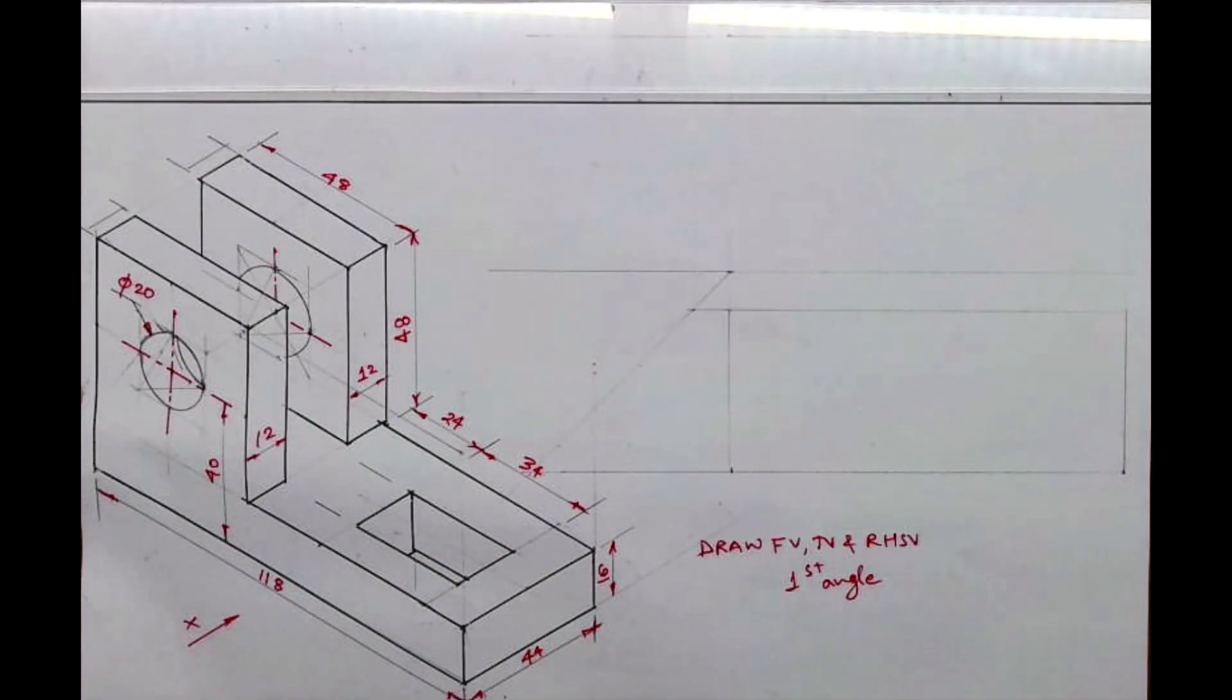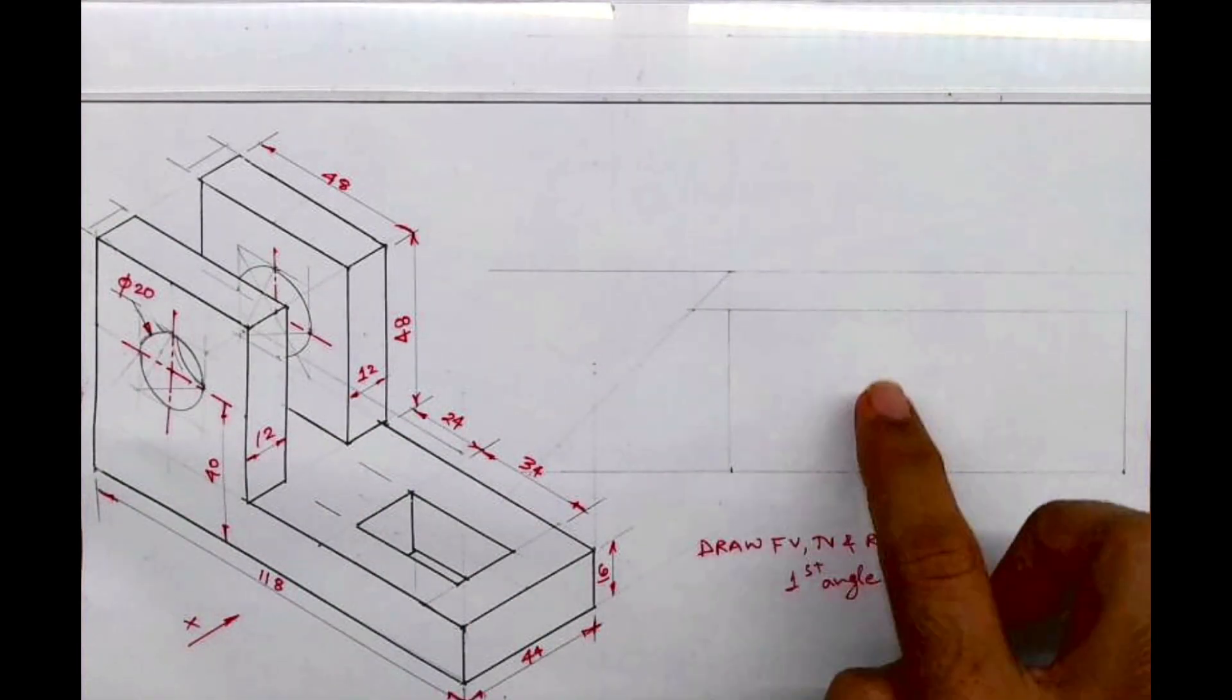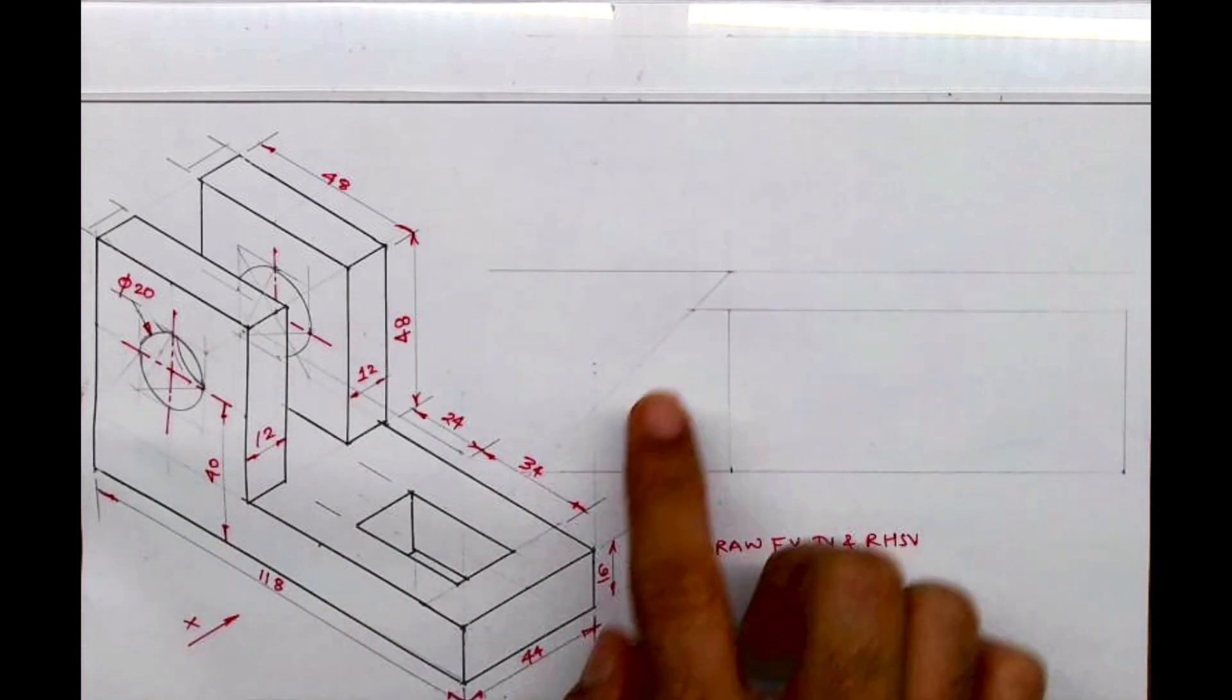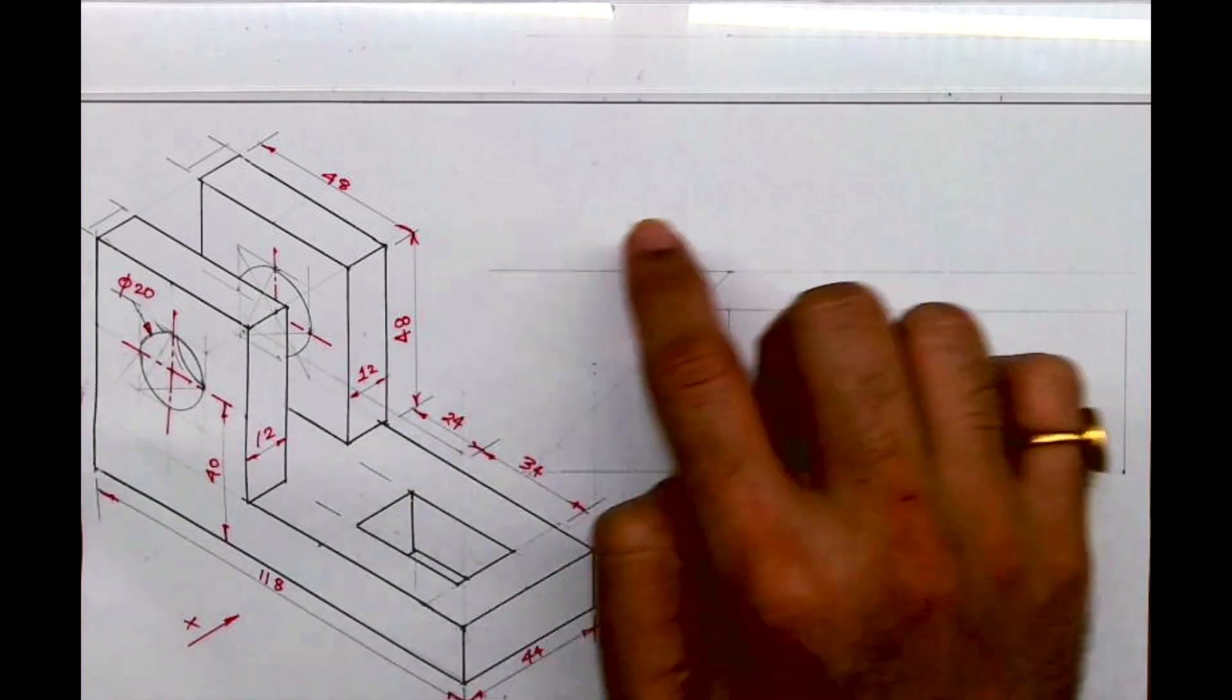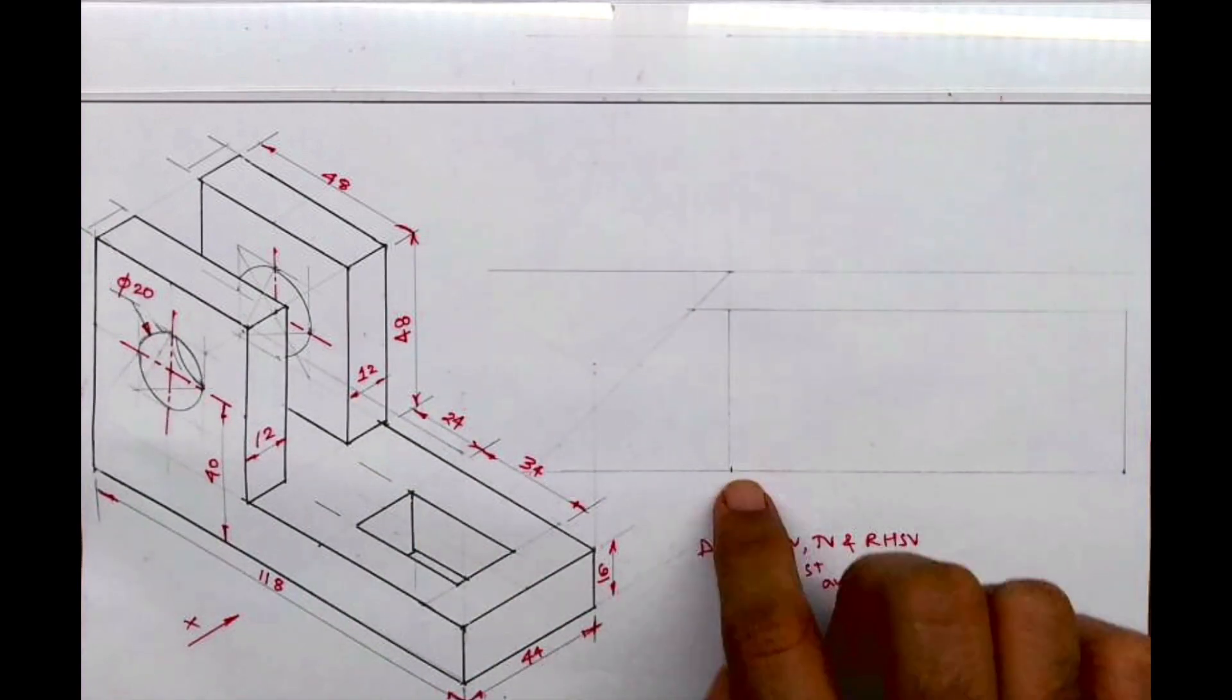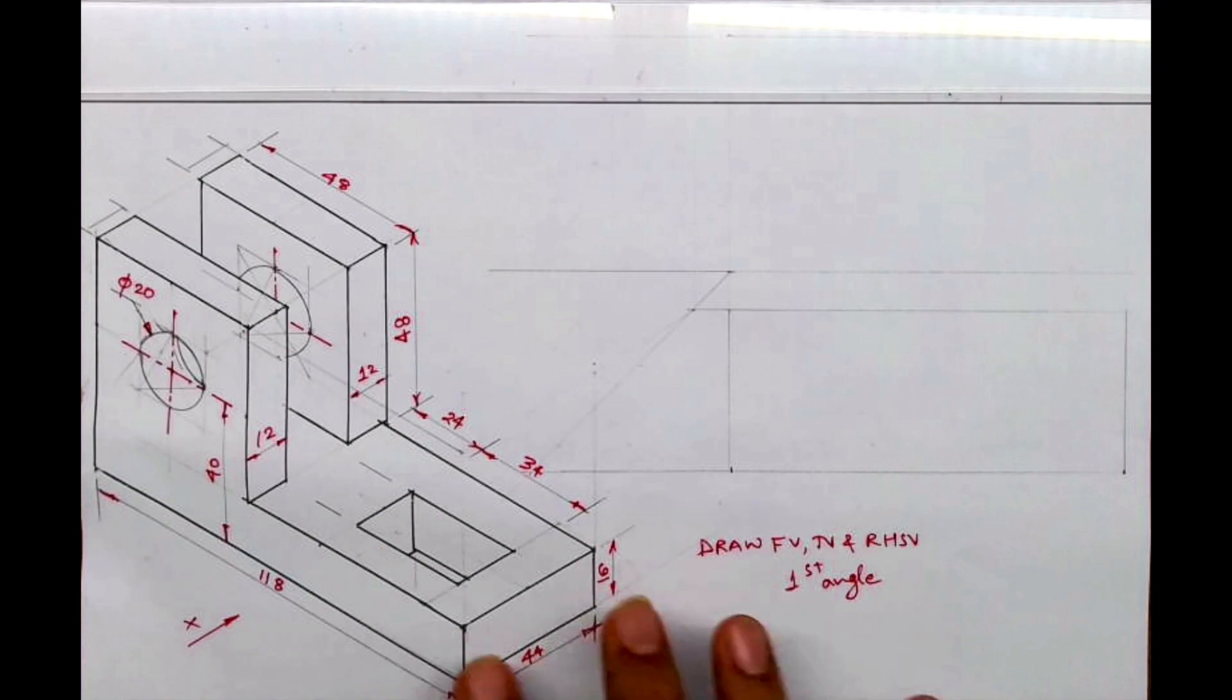Welcome to technical drawing. Today we'll see this problem in orthographic projection. We have to draw front view, top view, and right-hand side view in first angle. First we'll draw the layout. Length is 118, height is 16 plus 48 equals 64, and width is 44. After the layout, we'll start with the front view.